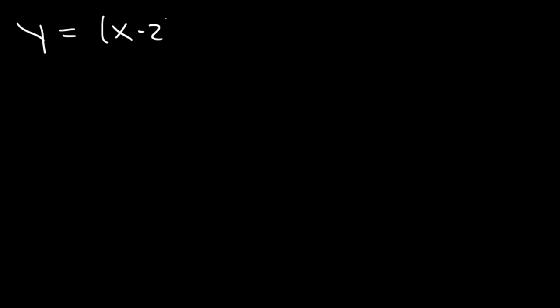In this lesson, we're going to talk about graphing quadratic functions in vertex form without using a data table. Let's start with this example: x minus 2 squared minus 3. First, find the vertex. We can see that it's positive 2 and negative 3.